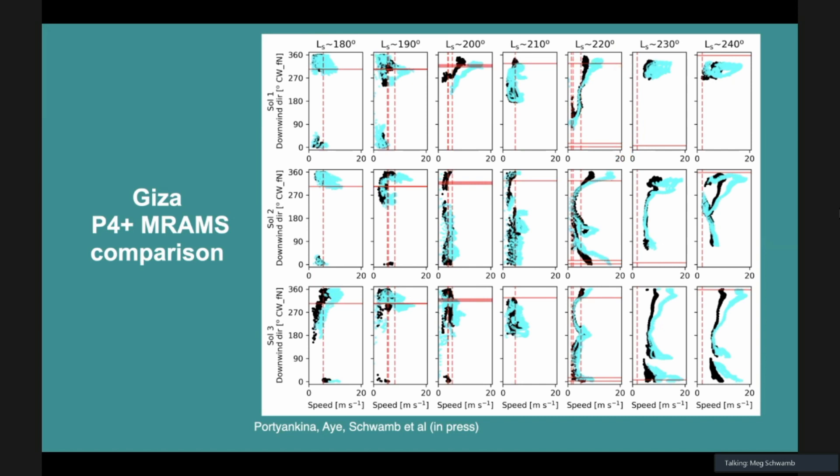What the model is showing in blue is where it thinks it gets wind directions from the lower atmosphere and black being the higher atmosphere.